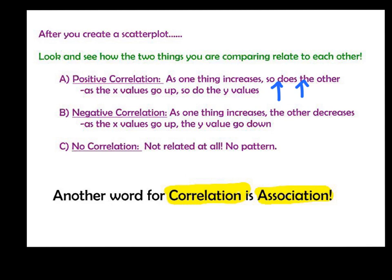The second type of relationship you might see in a scatter plot is called a negative correlation. A negative correlation means as one of your values increases, as the values start going up, the other value decreases. So as your x value goes up, the y value goes down. An example of that would be the more time you spend on Twitter, the lower your test scores were. As your minutes on Twitter went up, your test scores went down. That's called a negative relationship or negative correlation.